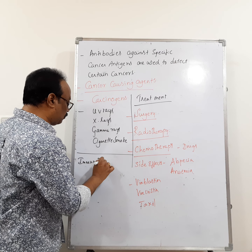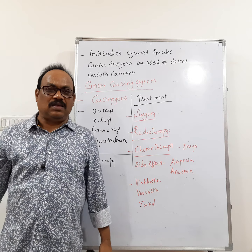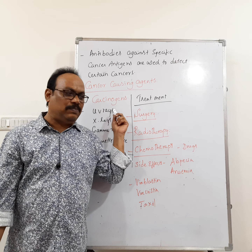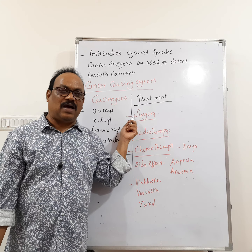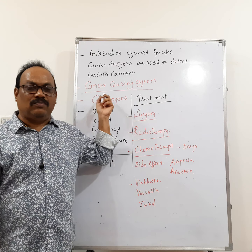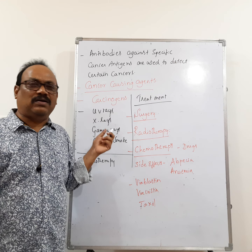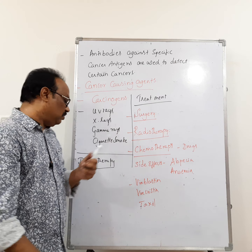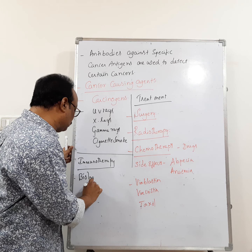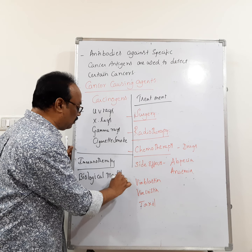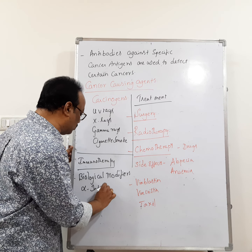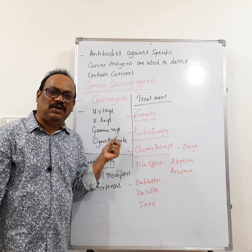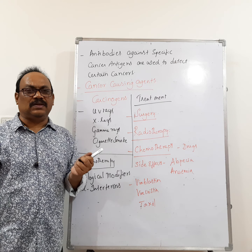The fourth treatment is immunotherapy. Diagnostic methods include biopsy, blood test, positron emission test, X-ray, CT scan, and MRI. When diagnostic methods cannot identify tumor cells, immunotherapy is used. In immunotherapy, biological modifiers such as alpha interferons are injected. Alpha interferons stimulate the immune system so that it can detect and fight the cancer.